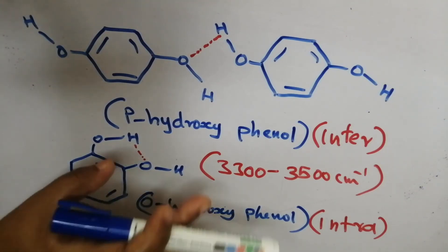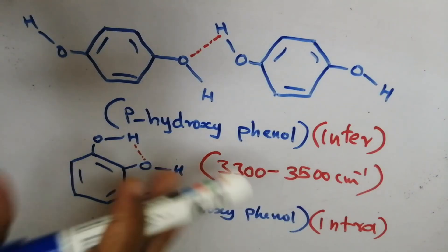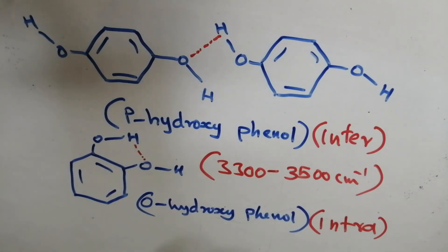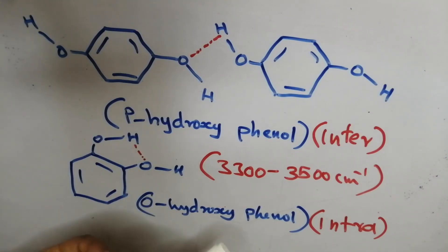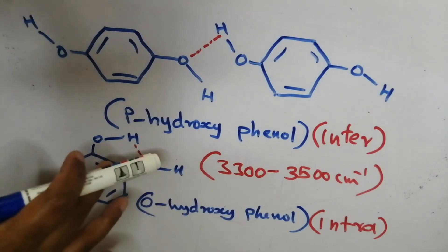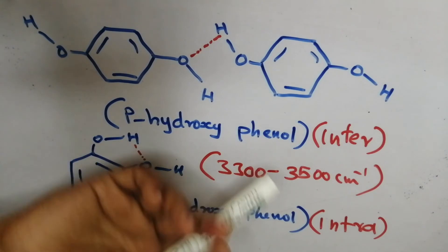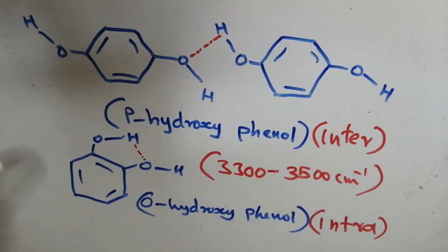In summary, using the IR spectrum, if we vary the concentration and observe that any absorption band changes, that corresponds to intermolecular hydrogen bonding. If the values remain unchanged upon dilution, it indicates intramolecular hydrogen bonding. This is how we distinguish between the two types of hydrogen bonding using IR spectroscopy.